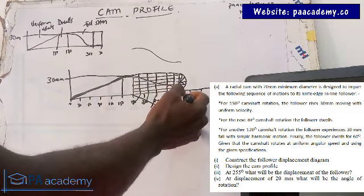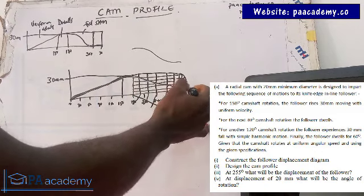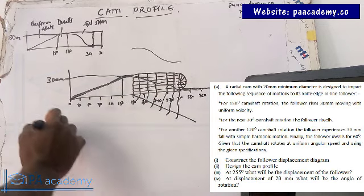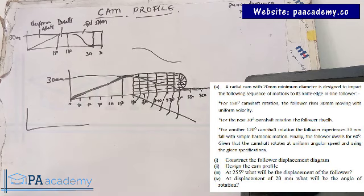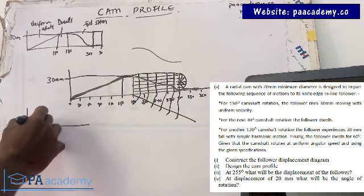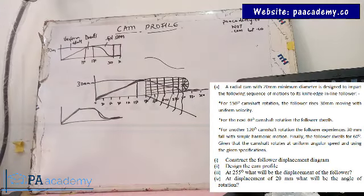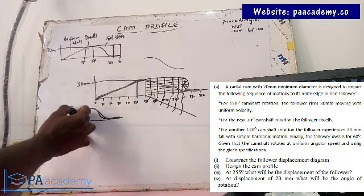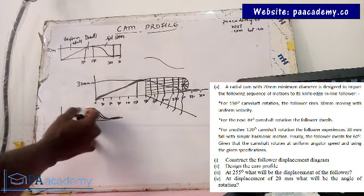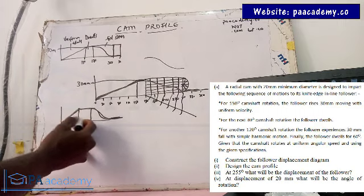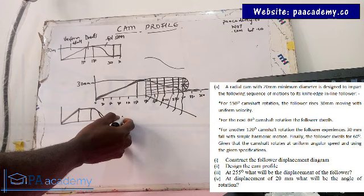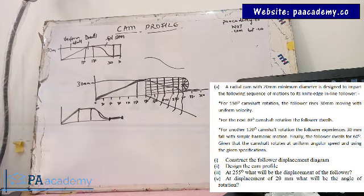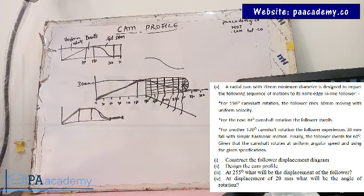So to 300 degrees, and then for the last 60 degrees it just goes like this — a straight dwell. This is how it looks at the end. You're going to have a diagram where from here to here it rises with uniform velocity, from here to somewhere here it dwells, from here to here it falls with simple harmonic motion, and then from here to 360 it dwells. That is how you construct the follower displacement diagram — that's question one.